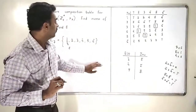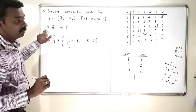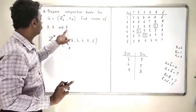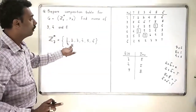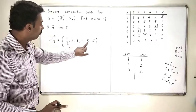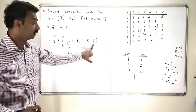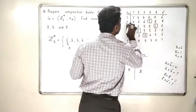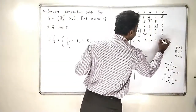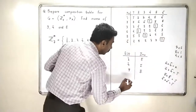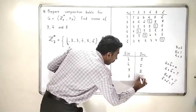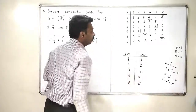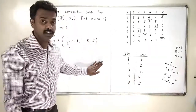This finishes our exercise of finding the inverses of 3, 4, and 5. You can also find the inverse of 2-bar and 6-bar: the inverse of 2-bar is 4-bar, and the inverse of 6-bar is 6-bar itself. This now completely finishes our exercise.